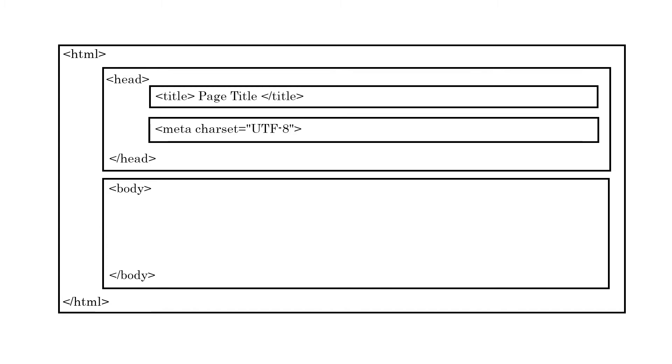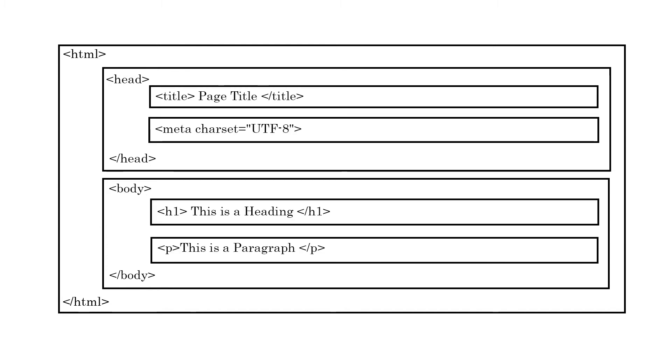An HTML page is enclosed by an opening html tag and a closing html tag. It has two parts: head and body. The head part contains title, meta, and link type tags. Basically, your web page content goes between the body tag.